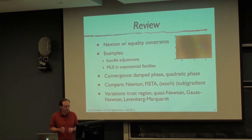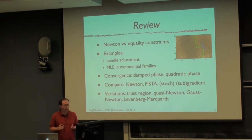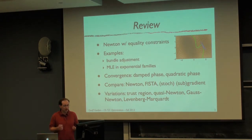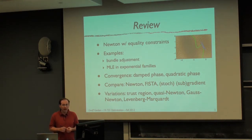We talked about variations of Newton's method, like quasi-Newton algorithms like LBFGS, Gauss-Newton which is for solving least squares problems, and Levenberg-Marquardt, which is an example of a trust region method.